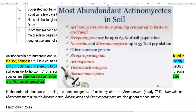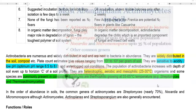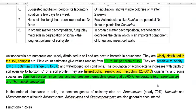The common genera of actinobacteria found in soil are mainly Streptomyces, which comprises 70% of the actinobacterial population in soil. Apart from that, Nocardia, Micromonospora, Actinoplanes, and Streptosporangium are other groups of actinobacteria commonly encountered in the soil system.